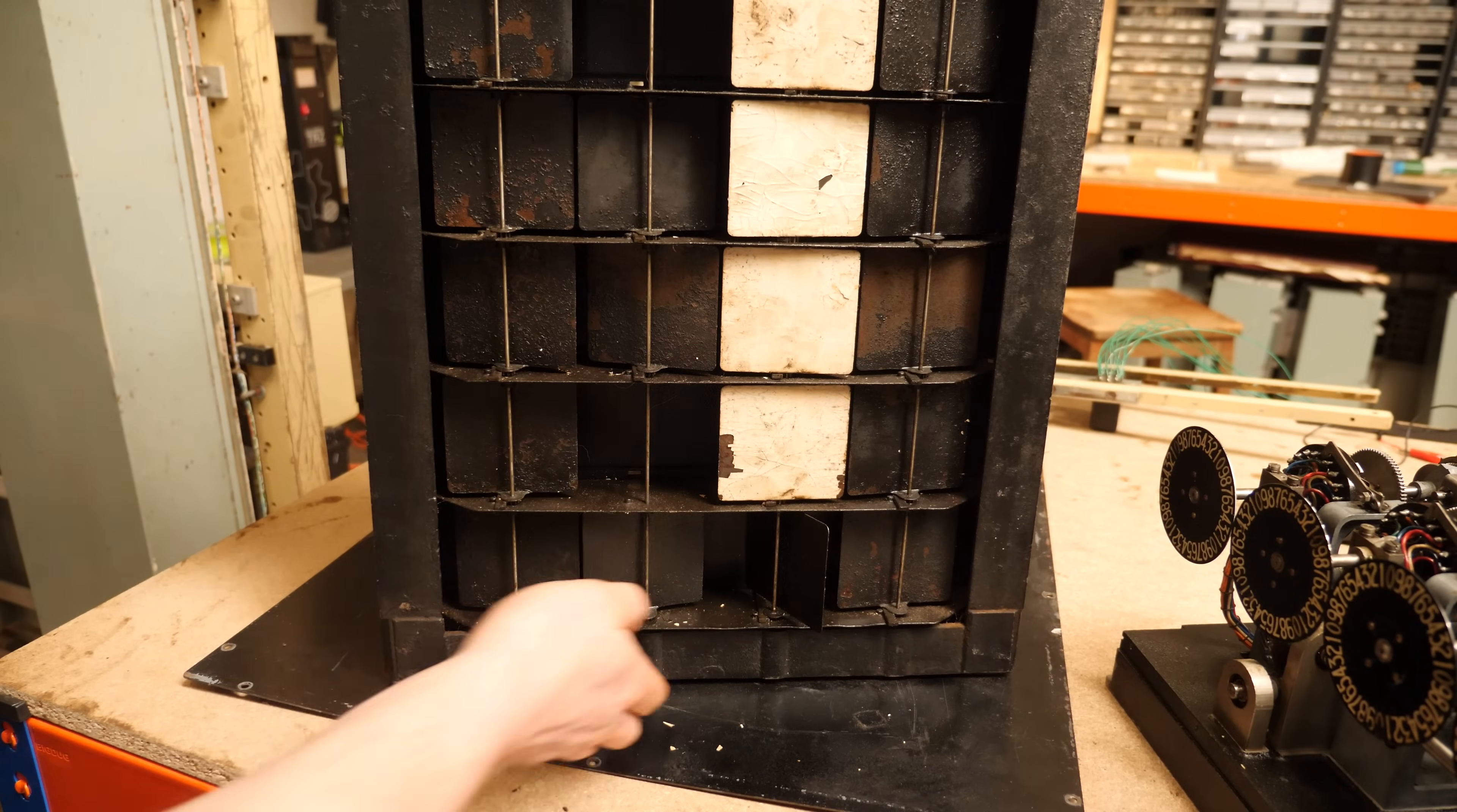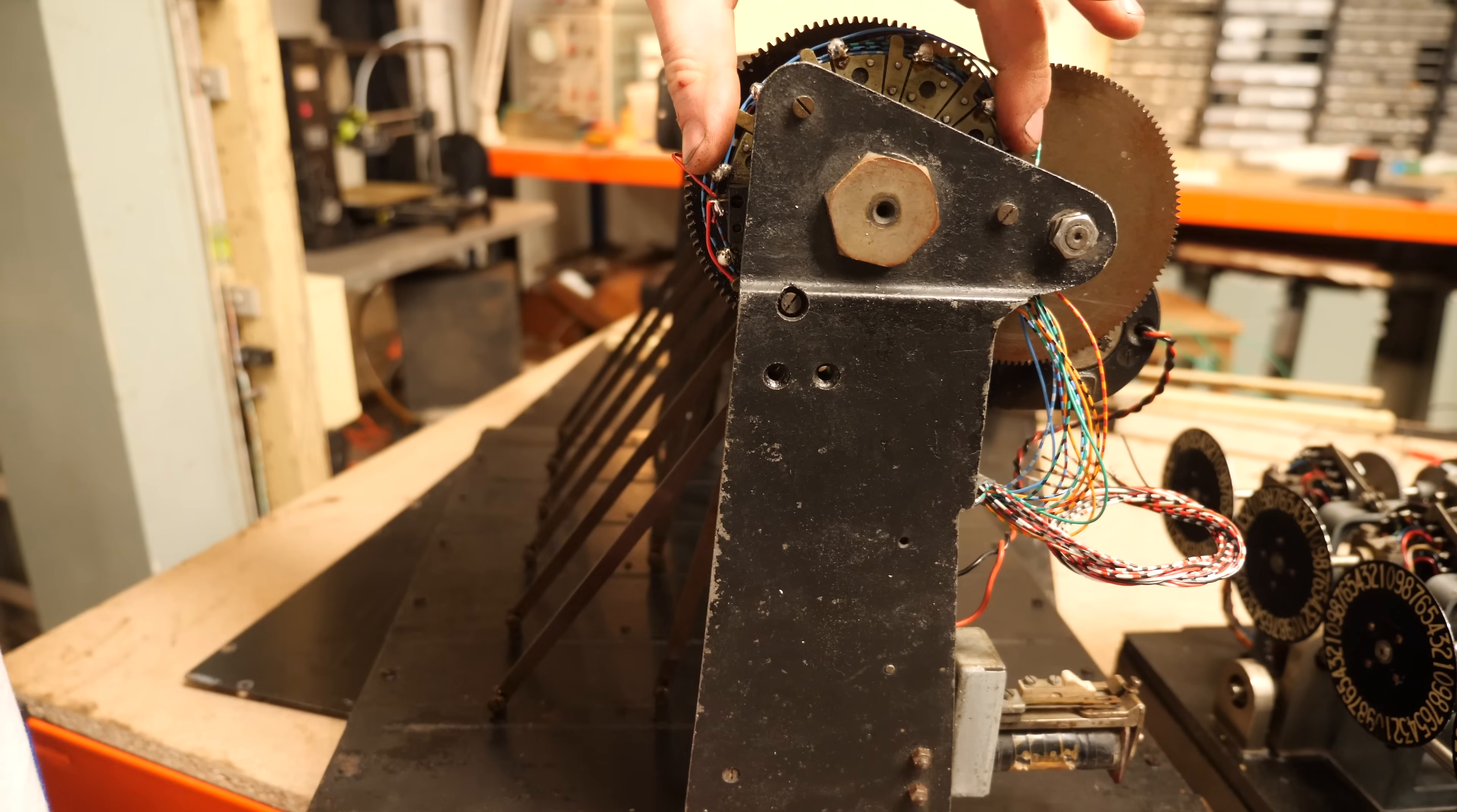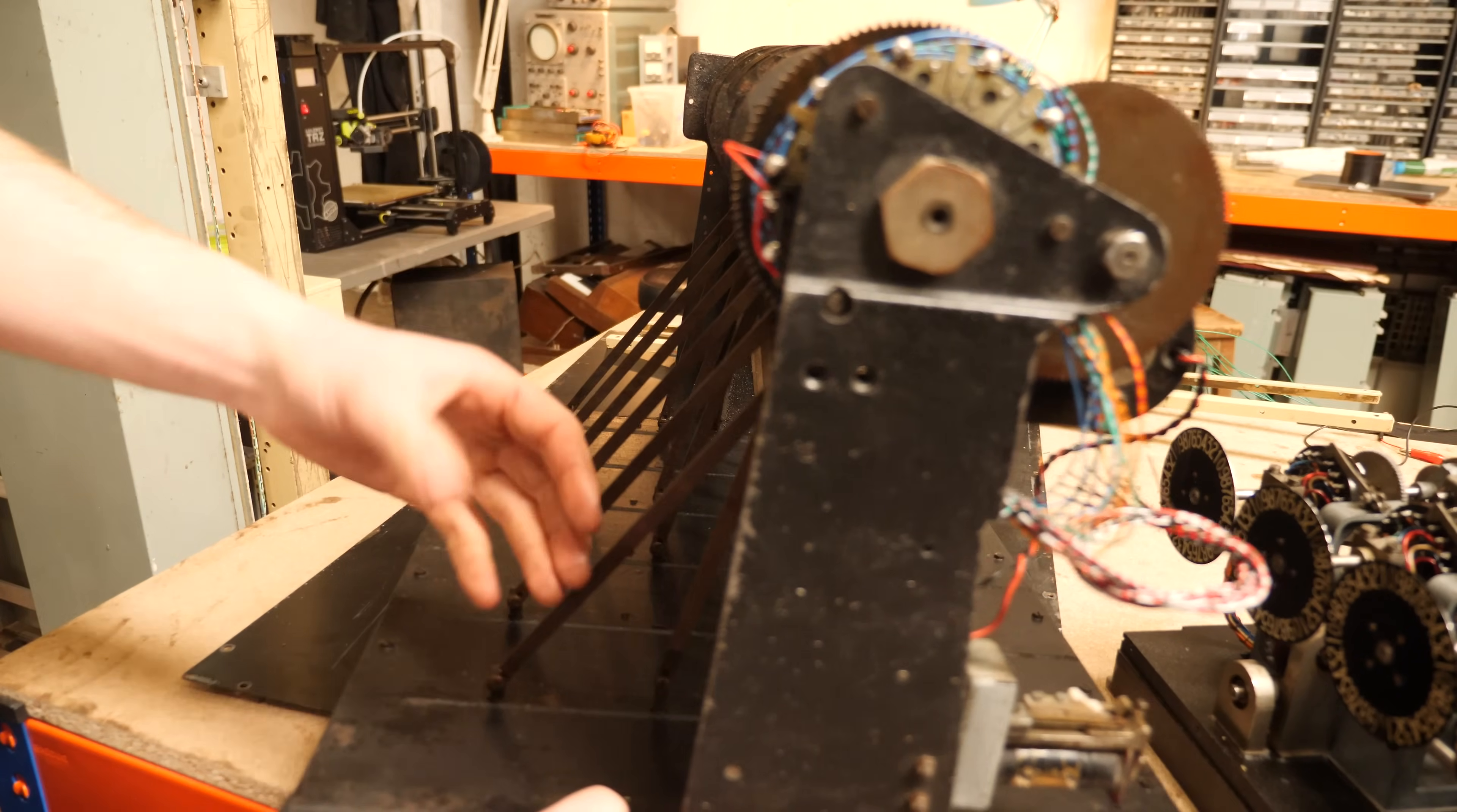And it also just so happens that on the top of the number machine there is also a contact thing, it's very hard to see but this is basically the same thing but on the back of the numbers. This is directly connected to the cam that is on the back that calls the numbers you would have seen in that video.